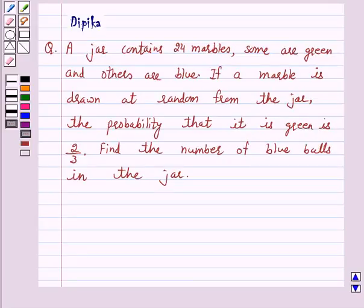Hello and welcome to the session. I am Deepika here. Let's discuss a question which says a jar contains 24 marbles. Some are green and others are blue. If a marble is drawn at random from the jar, the probability that it is green is 2 upon 3. Find the number of blue balls in the jar.